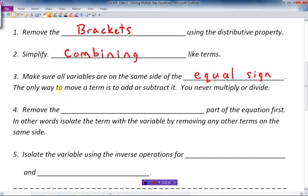Before I do that though, number three, the only way to remove a term is to add or subtract it. When you move a term from one side to the other, you always add or subtract terms if it's a complete term. You never multiply or divide.